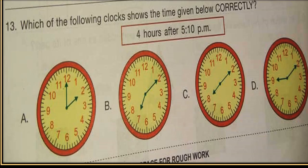Question number 13: which of the following clocks shows the time given below correctly? The time given is 4 hours after 5:10 PM. Look at the options A, B, C, D and choose the clock which shows the given time correctly, that is 4 hours after 5:10 PM.